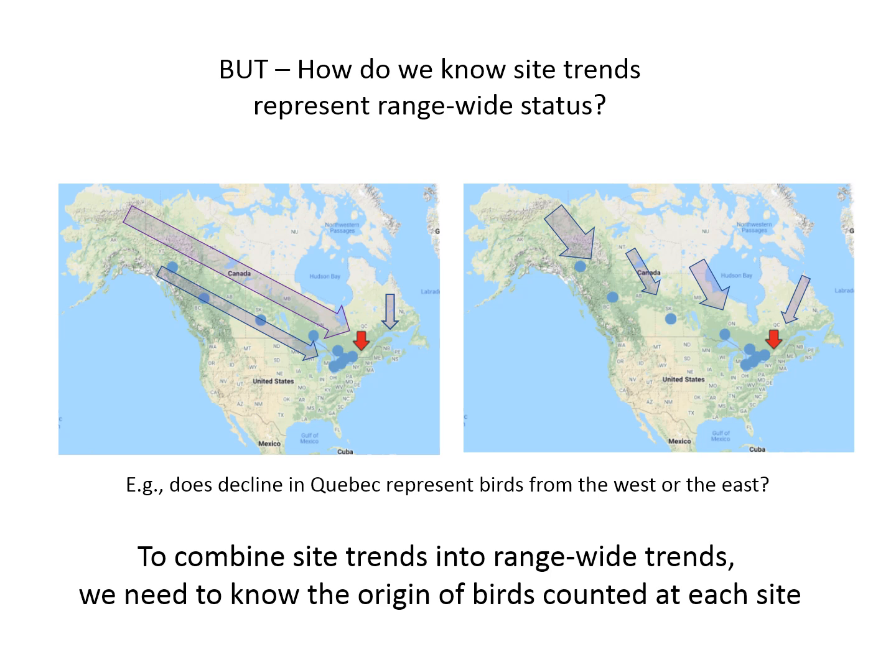But if you look at the map on the right, if the migration is more southeast so that the western birds are being sampled by the western stations, and the portion of the range being sampled by that eastern site is mainly birds coming out of Quebec and Labrador, then the decline might be quite localized to that region.